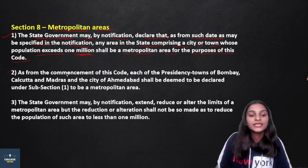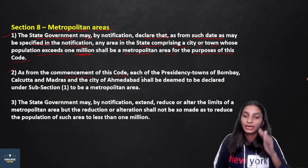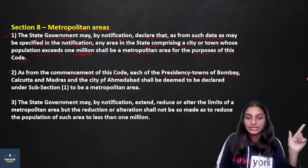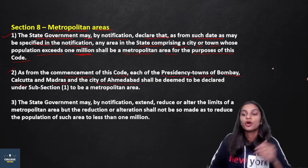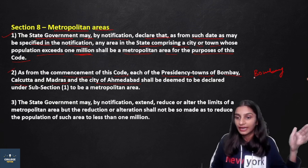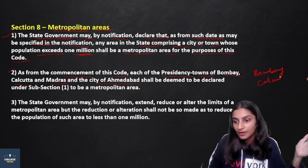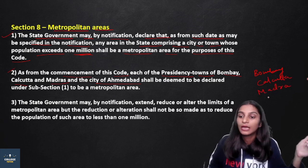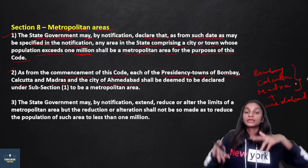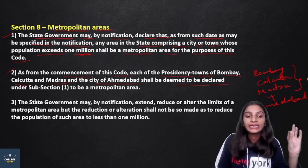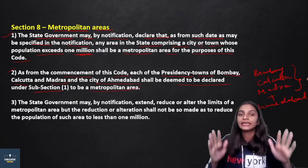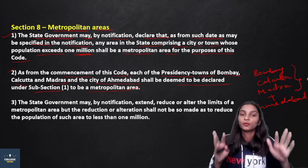Subsection 2 states that as from the commencement of this code, each of the presidency towns — Bombay, Calcutta, and Madras — as well as the city of Ahmedabad, shall be deemed to have been declared under subsection 1 to be a metropolitan area. This is because the code is from 1973.